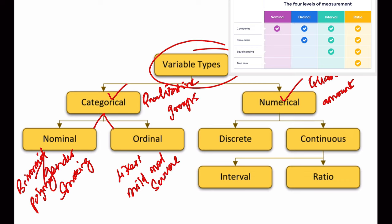Under numerical variables, if the outcomes are only whole numbers, then it is otherwise called as discrete or integer variables, where we have counts — usually the number of students, number of family members, number of bacteria in a colony. If it follows a decimal point, then it becomes a continuous variable. Under continuous variables, we have two types: interval and ratio.